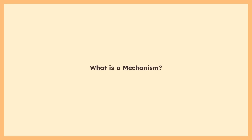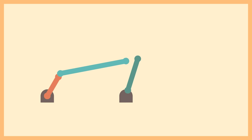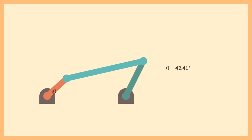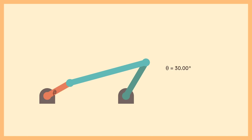But first, what is a mechanism? The word implies movement, and movement means a change in position over time. A mechanism has one or more variables that we can control to define its position. Other parameters, such as the dimensions of their physical components, are given to us, and it is our task to calculate the relative positions of the elements given a set of constraints.